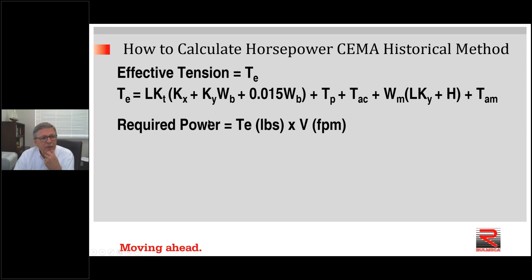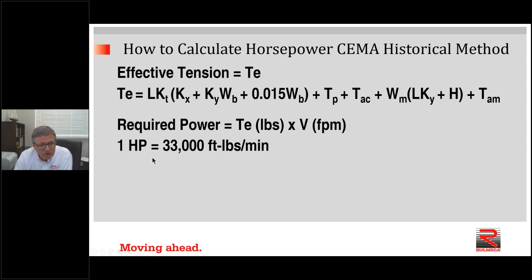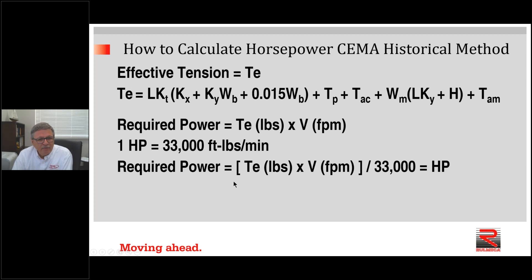To calculate required power, it's simply a matter of multiplying the required belt tension in pounds by the belt speed: TE times V. The answer comes out in foot-pounds per minute. Since one horsepower equals 33,000 foot-pounds per minute, you divide TE times V by 33,000 to get the answer in horsepower. So TE in pounds times V in feet per minute divided by 33,000 yields an answer in horsepower.